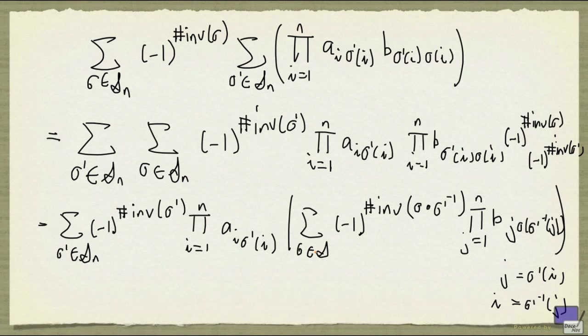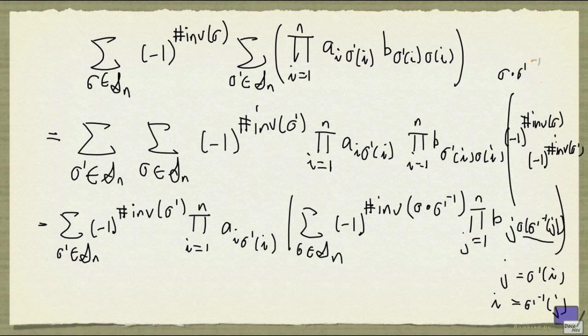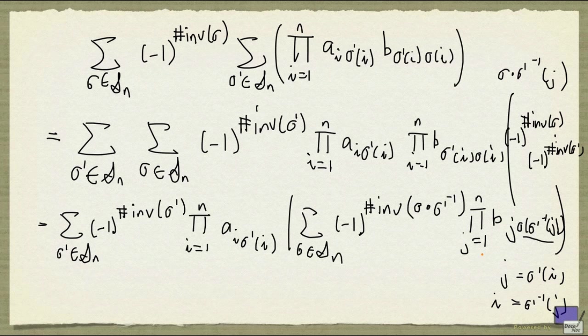Now, as sigma ranges through, so this is supposed to be s of n, as sigma ranges through all permutations of 1 up to n, so that's this composed permutation. This over here is the same as sigma composed with sigma prime inverse of j. So in other words, this is precisely the determinant of B.